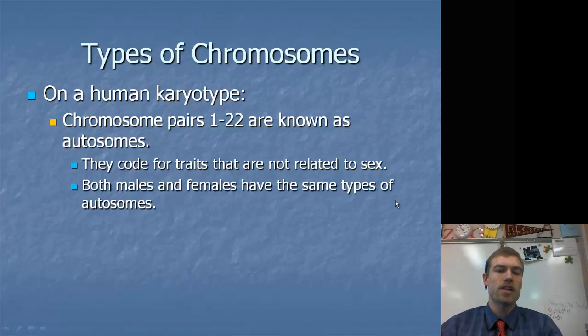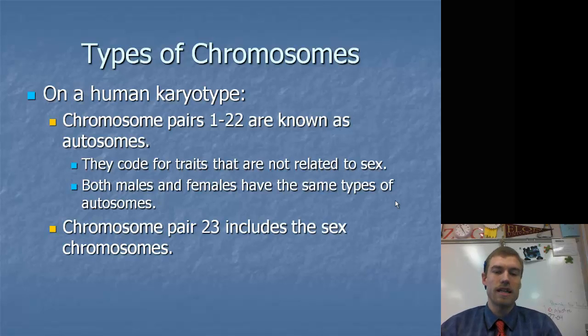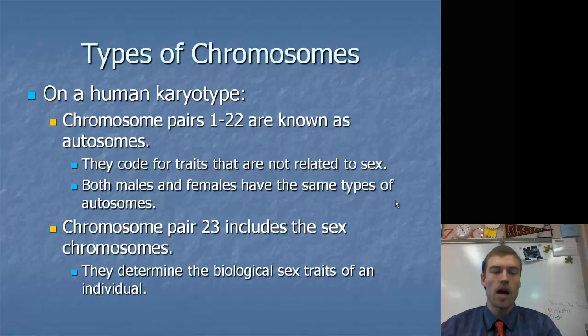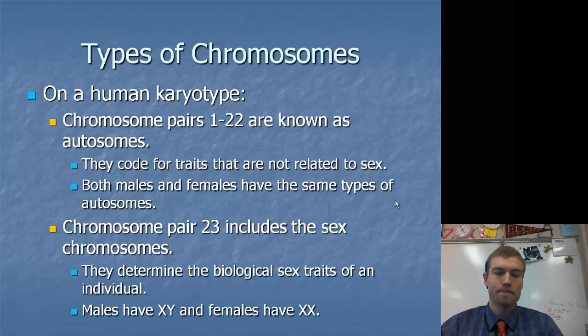In a human karyotype, chromosomes one through twenty-two are known as autosomes and they code for traits that are not related to sex at all. Both males and females have the same types of autosomes. Chromosome pair number twenty-three includes the sex chromosomes which are the X and the Y. Those determine the biological sex traits of an individual. Males have XY and females have XX.